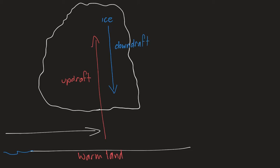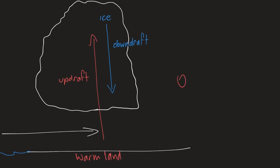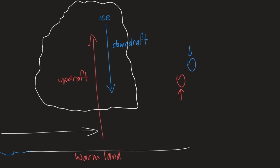We've got particles moving up and particles moving down, and they're going to collide with each other. Electrons get transferred from one particle to the other — the particles going up become positive, particles going down become negative. This means we get a charge separation where the bottom of the cloud becomes negative, the top of the cloud becomes positive, and the ground becomes positive.